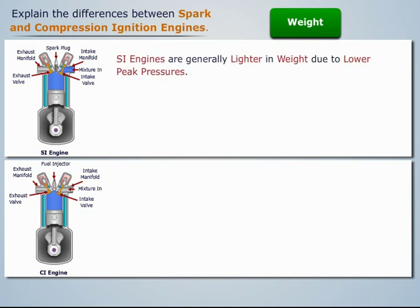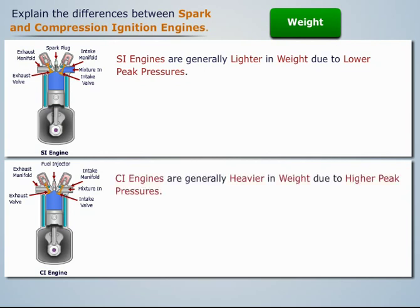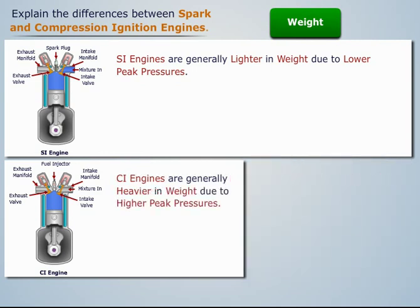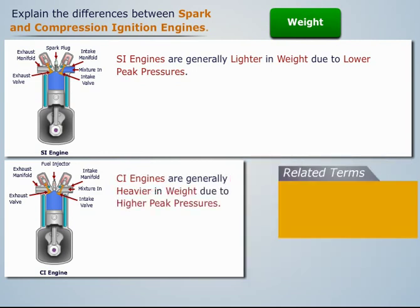Spark ignition engines are generally lighter in weight due to lower peak pressures, whereas compression ignition engines are generally heavier in weight due to higher peak pressures.